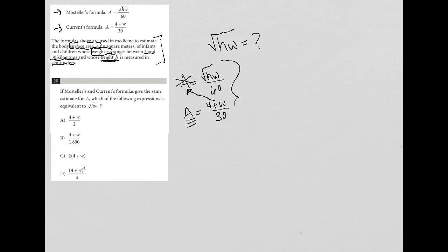So if I do that, I'd end up with 4 plus W over 30 is equal to the square root of HW over 60. So then if the question is asking me for the value of HW, that just means I need to isolate HW. So that should be pretty easy here, because I can just multiply both sides of the equation by 60.